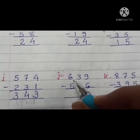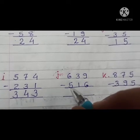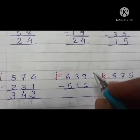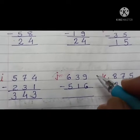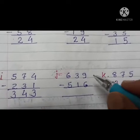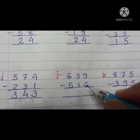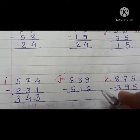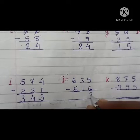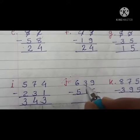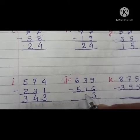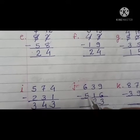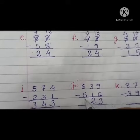Next problem: subtract ones first. 9 minus 6, without borrowing, equals 3. Then 3 minus 1 equals 2. And 6 minus 5 equals 1.